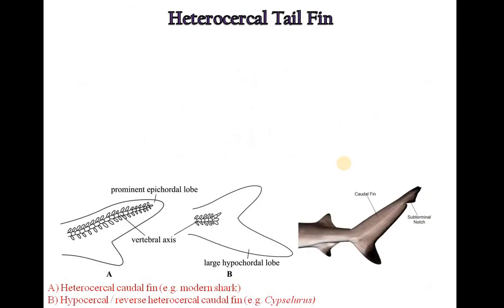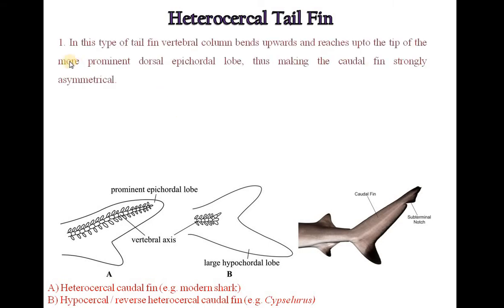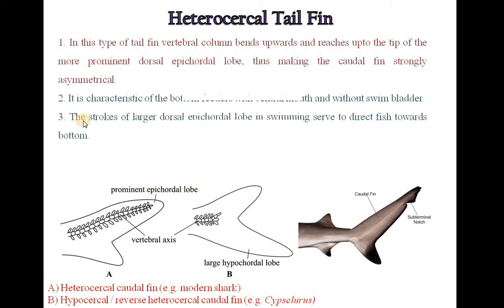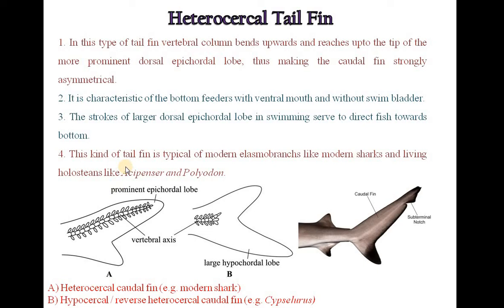The next type of tail fin is the heterocercal tail fin. In this type of tail fin, the vertebral column bends upward and reaches up to the tip of the more prominent dorsal epichordal lobe, thus making the caudal fin strongly asymmetrical. It is characteristic of bottom feeders with a ventral mouth and without a swim bladder. The stroke of the larger dorsal epichordal lobe in swimming serves to direct the fish towards the bottom. This kind of tail fin is typical of modern elasmobranchs like modern sharks and living holosteans like Acipenser and Polyodon.